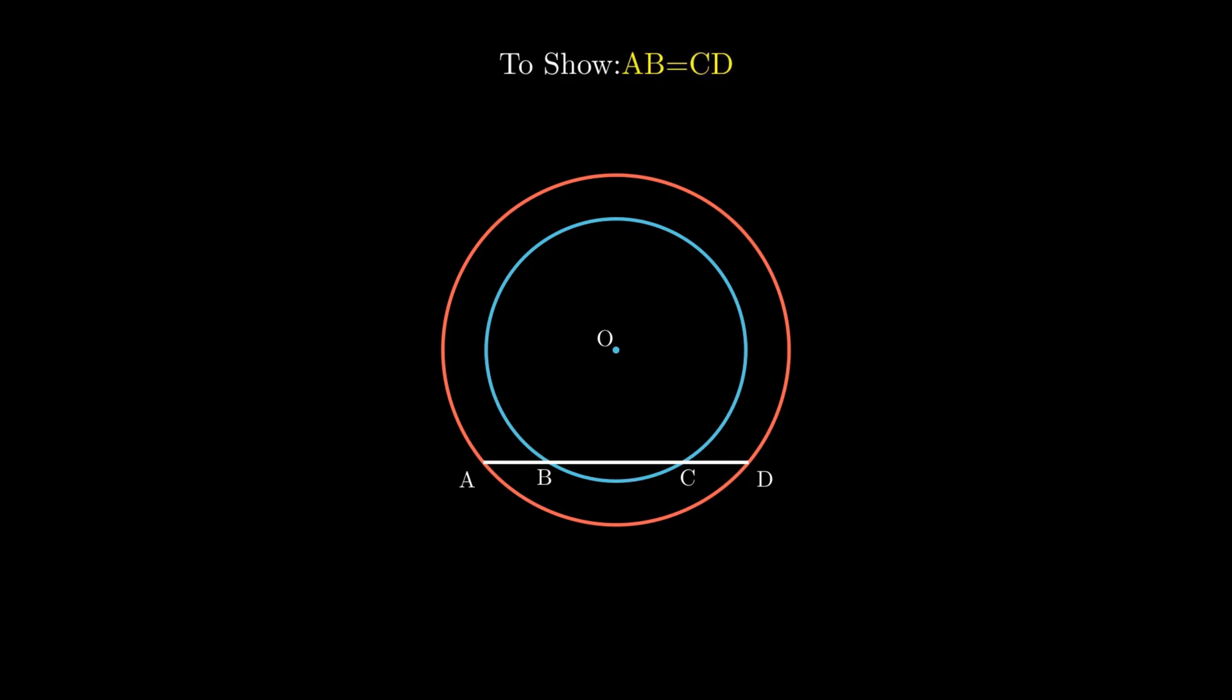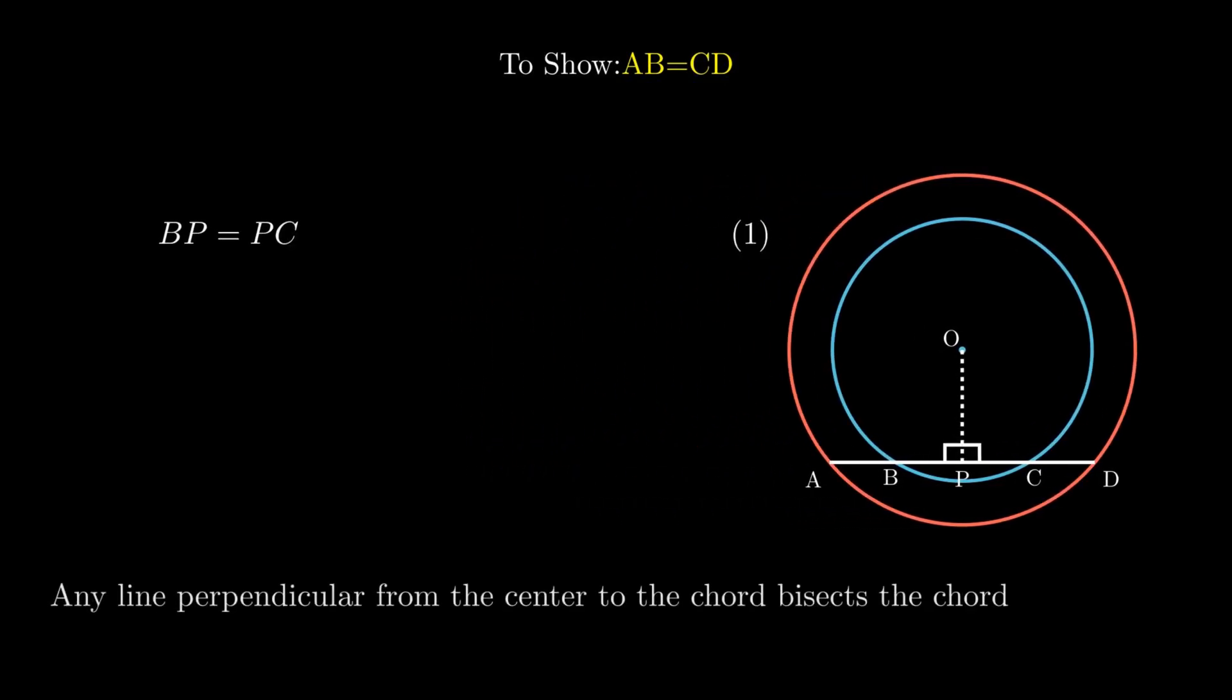To prove this, we need to construct a perpendicular line OP from the center point O to the segment intersecting the points on the concentric circles. As any line perpendicular from the center to the chord bisects the chord.